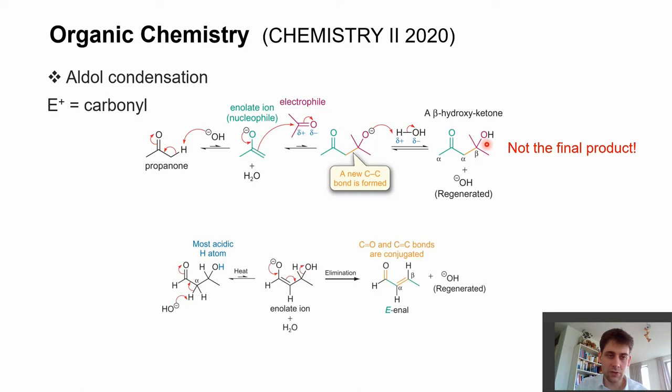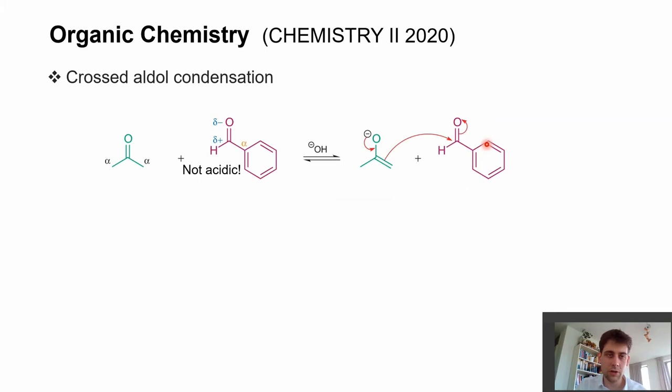Of course, this cannot only happen between carbonyl components of the same type, but you could also do a so-called cross-aldol condensation. And here you're using two different carbonyl components to start with. In this case, we're using again our acetone, the propanone, and benzaldehyde.